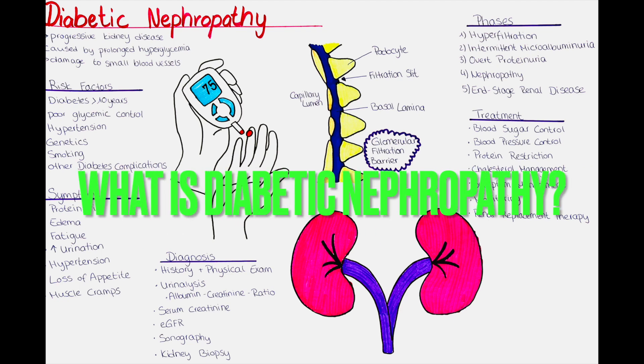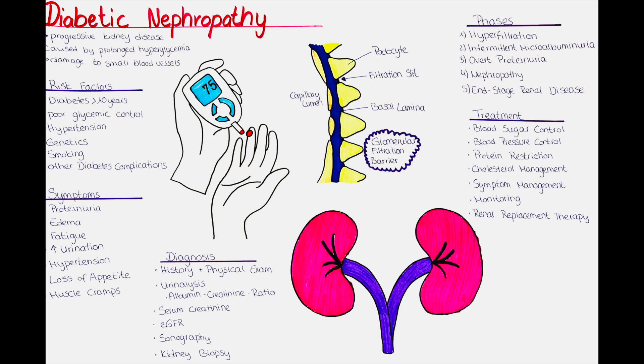What is diabetic nephropathy? Diabetic nephropathy is a serious complication of long-standing diabetes mellitus. It is a progressive kidney disease caused by prolonged hyperglycemia, so high blood sugar levels, in patients with diabetes. Over time, the consistently elevated blood glucose damages the small blood vessels and filters in the kidneys, leading to impairment of their function.